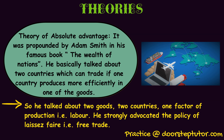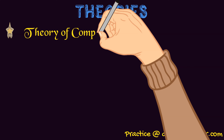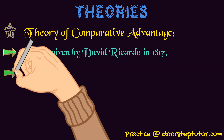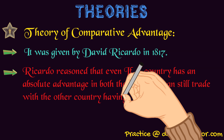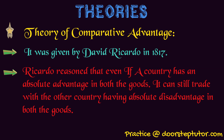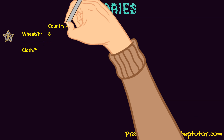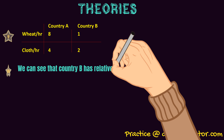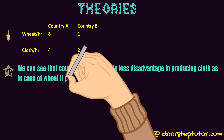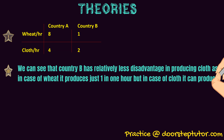The next theory is the theory of comparative advantage, given by Sir David Ricardo in 1817. He proposed that even if a country has an absolute disadvantage in both goods, it can still trade with other countries. For example, if country A (US) produces 8 wheat per hour and country B (India) produces 1 wheat per hour, and the US produces 4 cloths per hour while India produces 2 cloths per hour, then country B has an absolute disadvantage in both goods.